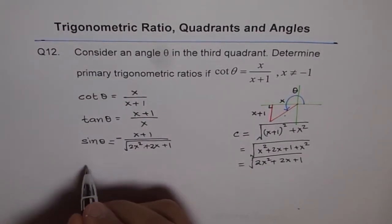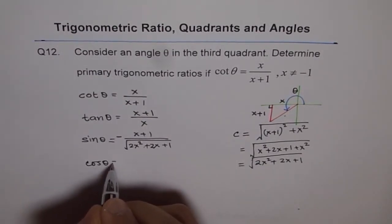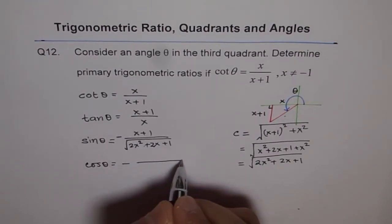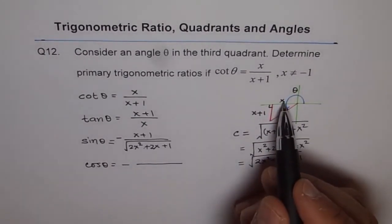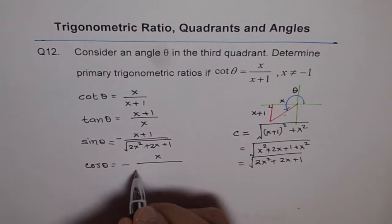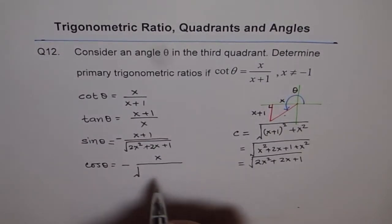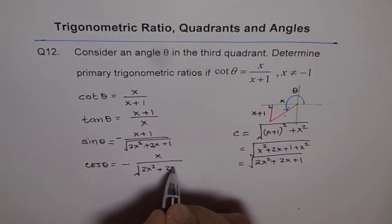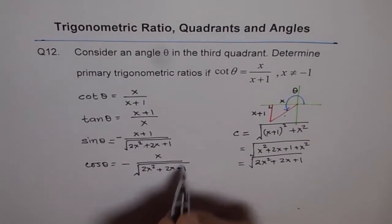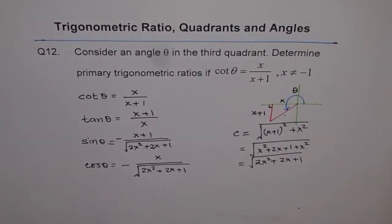Similarly, for cos theta, we will write negative of adjacent side is x. So x over square root of 2x square plus 2x plus 1. So these are our answers.